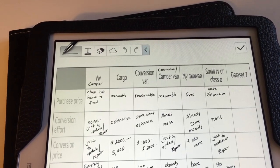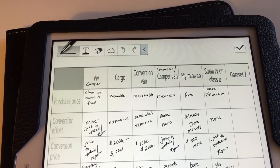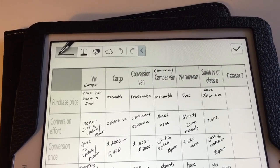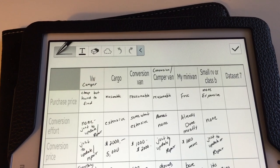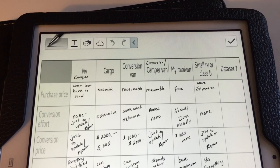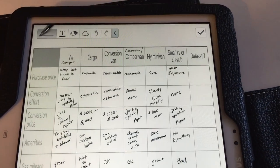I don't know what I was thinking with that. I guess a conversion van that needed to be totally converted into a camper. My minivan, a small RV or class B, and that's just an extra column.